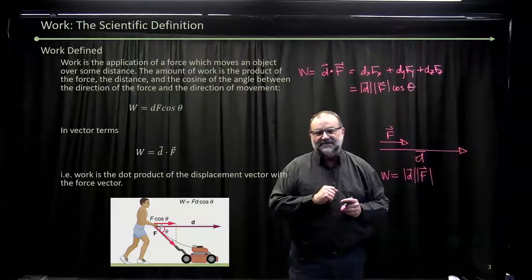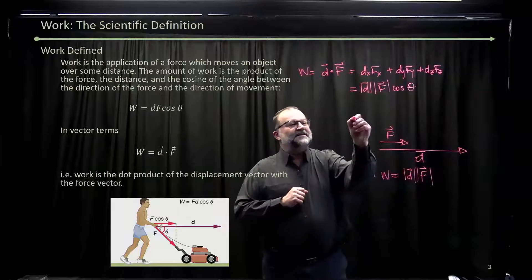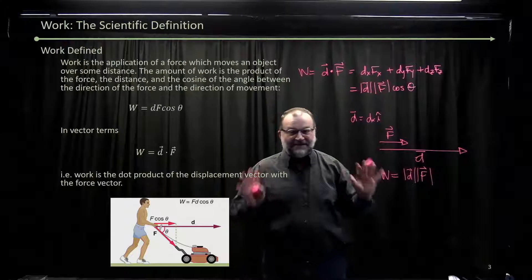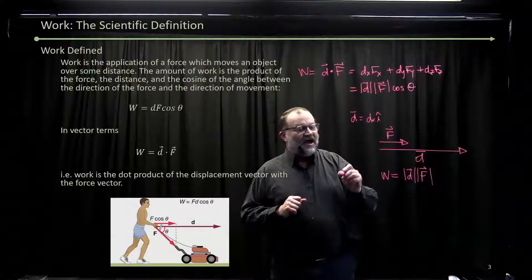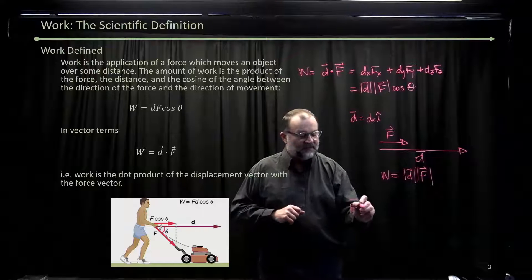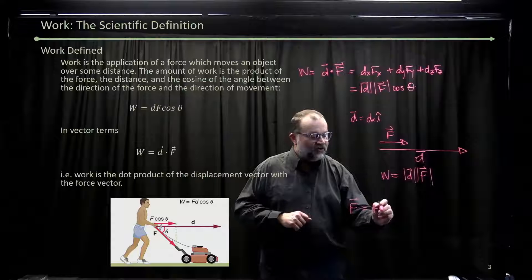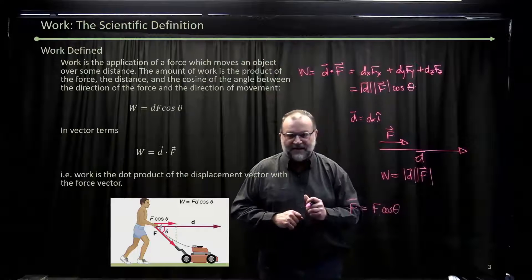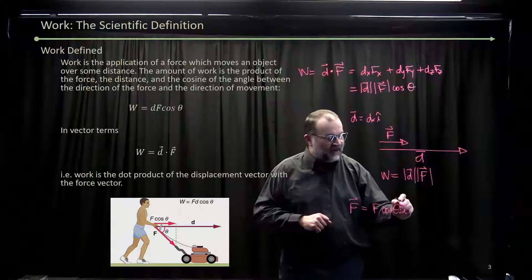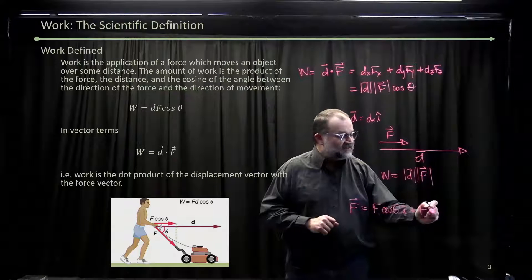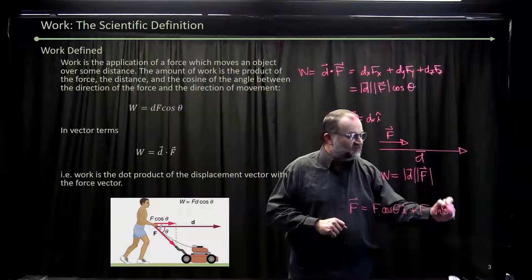The way it would break down in this diagram is d is dx i-hat, and that's it. f is fx, which is going to be f cosine theta—that's the x component—i-hat, plus f sine theta times j-hat.